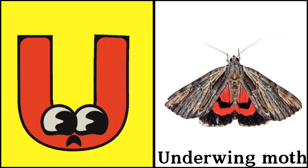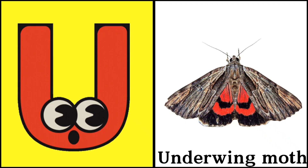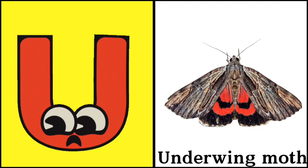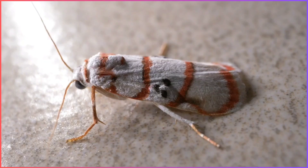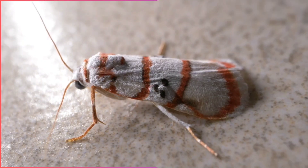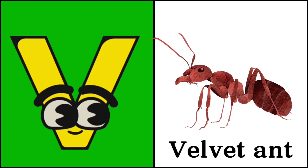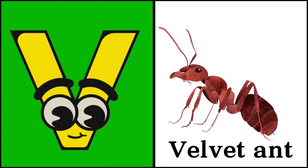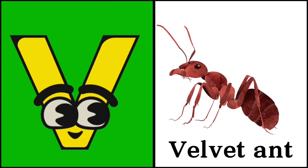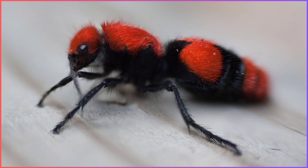U for Underwinged Moth. This is an Underwinged Moth. V for Velvet Ant. This is a Velvet Ant.